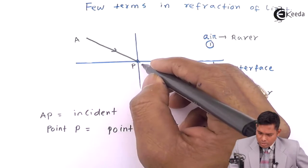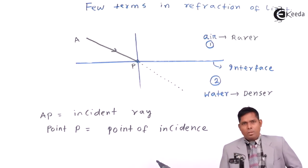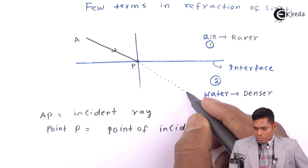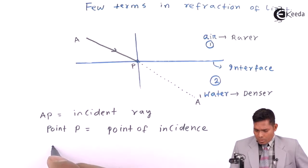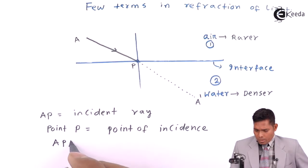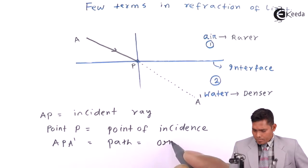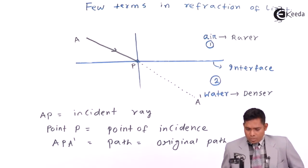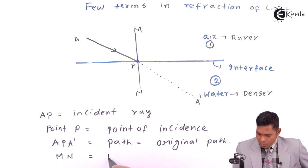This is the original direction. In the absence of water, the rays would have followed this path. Suppose this path A–P–A-dash is the original path. This line M is called the normal.